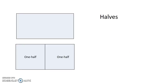We name the parts halves. So one part is one half and two parts or two halves are a whole. We have partitioned the whole into two equal parts and each fractional part is called one half.